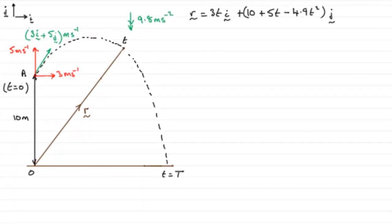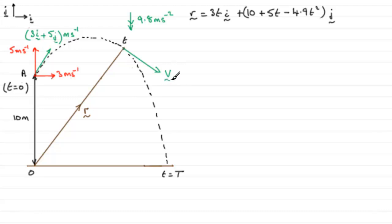In this next part, we're asked to find the velocity of the particle P at time t-seconds. We know that it's at this point here at t-seconds, and its velocity would be a vector that is tangential to the curve. Let's say that velocity is v. To get this velocity vector, we need to realise that v is always equal to the rate of change of the position vector r with respect to the time t. So we just need to differentiate this with respect to t.